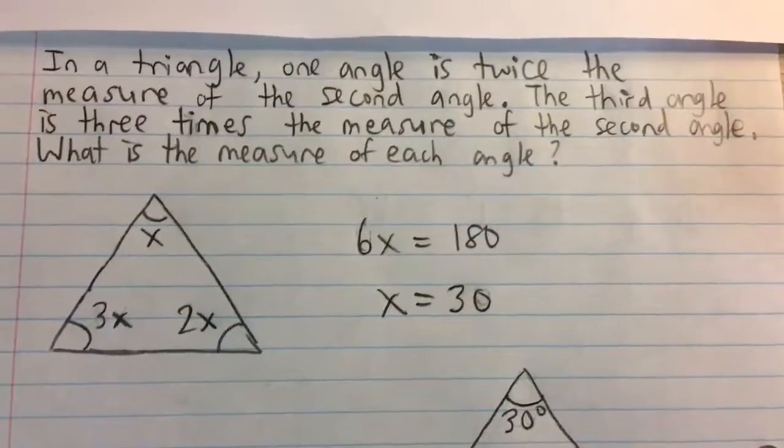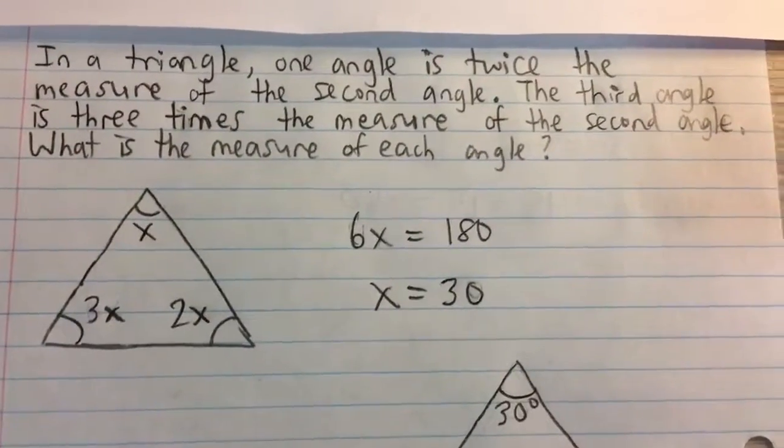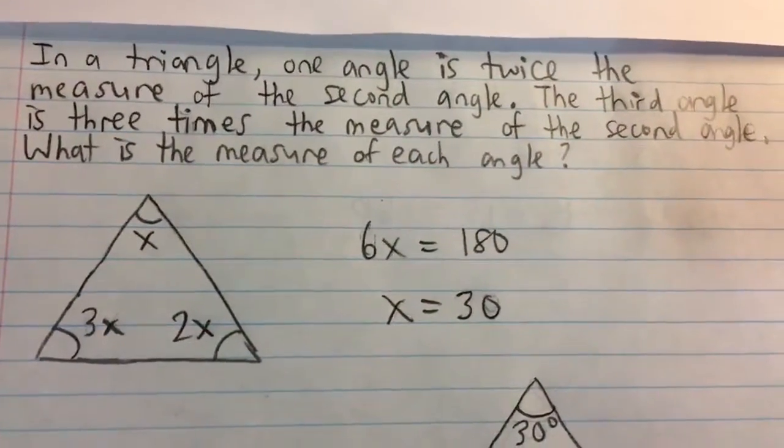In a triangle, one angle is twice the measure of the second angle, and the third angle is three times the measure of the second angle. What is the measure of each angle?